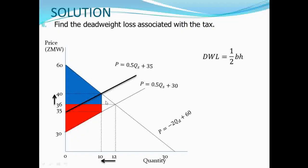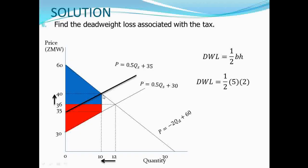So our deadweight loss is equal to 5 Kwacha. From the diagram, this region represents the deadweight loss, which is the loss in the welfare of producers and consumers that accrues to no player in the market.